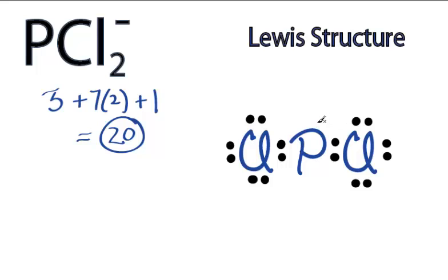Back to the central phosphorus - we've used 16, we have 4 more valence electrons, so 18 and 20 valence electrons for PCl2-.